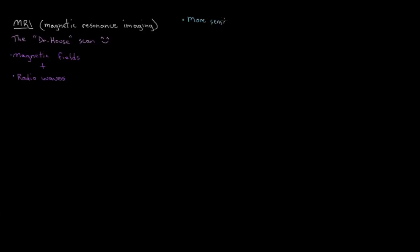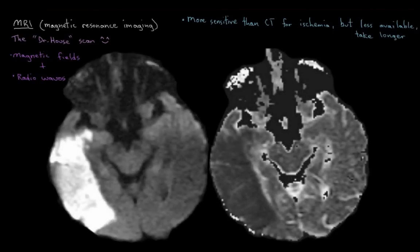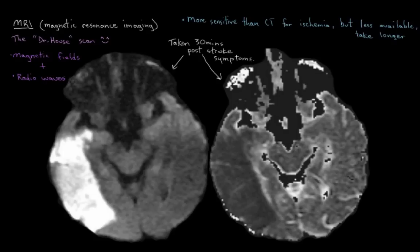MRIs are actually more sensitive in detecting brain ischemia than CT scans are, but they're less available and take a lot longer to do than a quick, readily available CT scan. Looking at these MRI images — remember how it can take up to almost a day for brain changes to appear on a CT scan? That's not the case with MRI. These images were taken a mere half hour after the patient started having their stroke symptoms — just incredible.